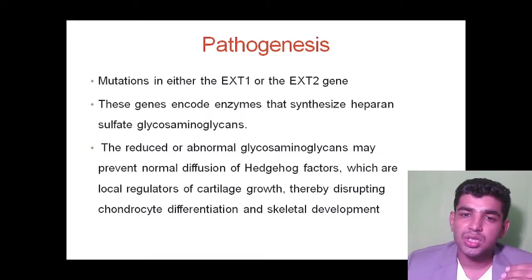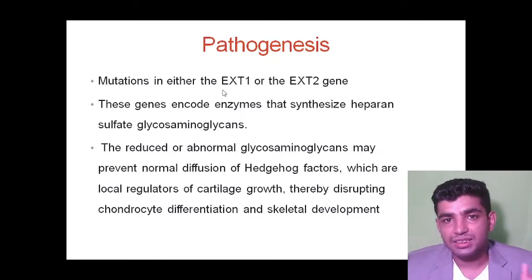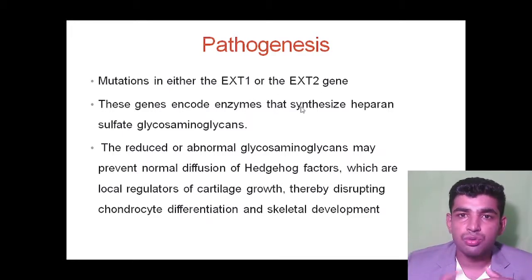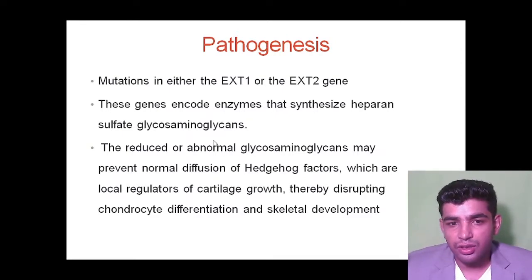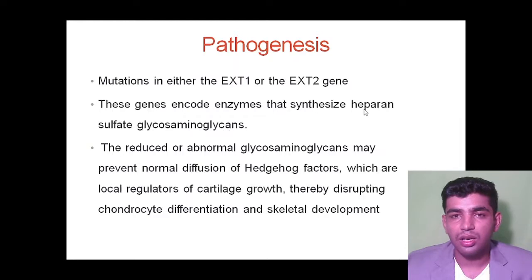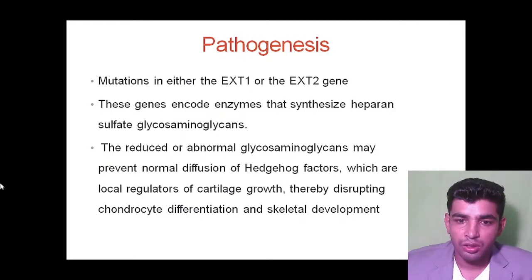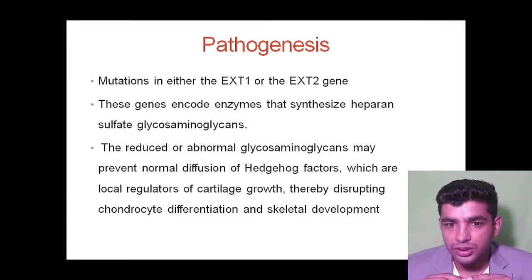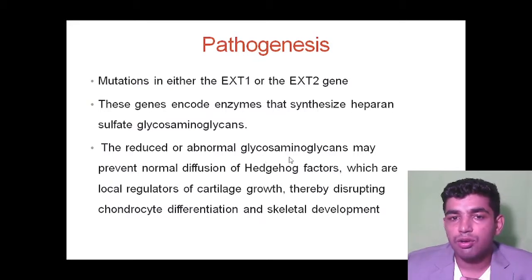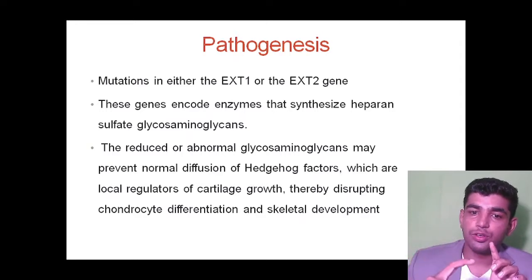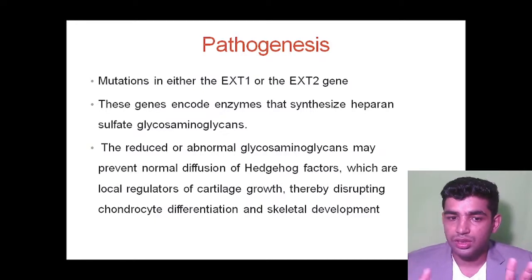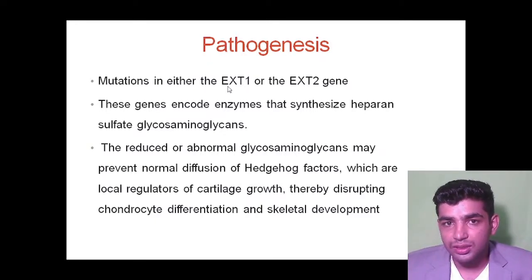Pathogenesis involves mutation in either the EXT1 or EXT2 gene. These two genes encode the enzyme heparan sulfate glycosaminoglycan, which is involved in bone matrix formation and controls hedgehog factors. Hedgehog factors are the main regulators of cartilage growth. Abnormal glycosaminoglycan leads to increased diffusion of hedgehog factors, causing excess cartilage growth.